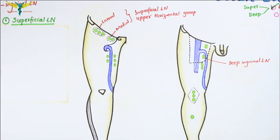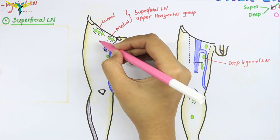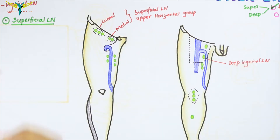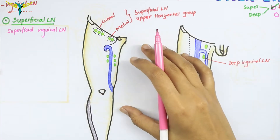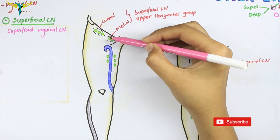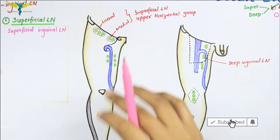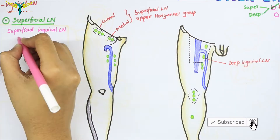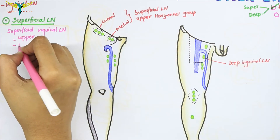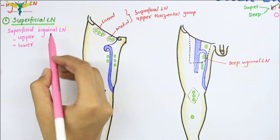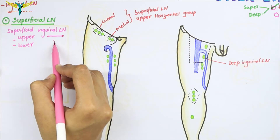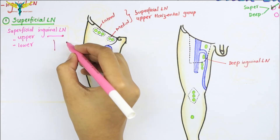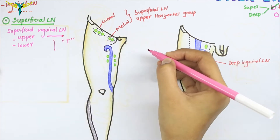In the lower limb, the main superficial lymph nodes are the superficial inguinal group of lymph nodes. These are present in the superficial fascia in the inguinal region, and they are arranged in two groups: the upper group and the lower group. The upper group lies horizontally and the lower group lies vertically, which resembles the letter T.